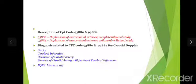93880 description says duplex scan of extracranial arteries complete bilateral study, and 93882 says duplex scan of extracranial arteries unilateral or limited study. The main difference is one is complete, another is unilateral. Majorly you will find the complete bilateral study which is 93880.